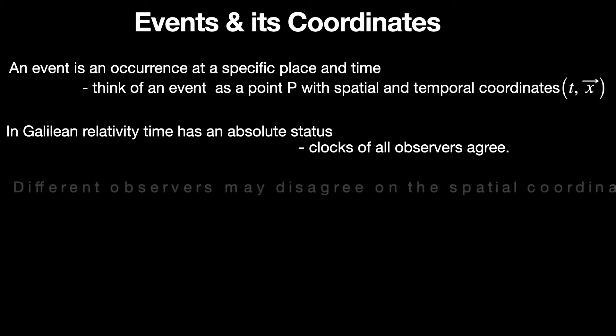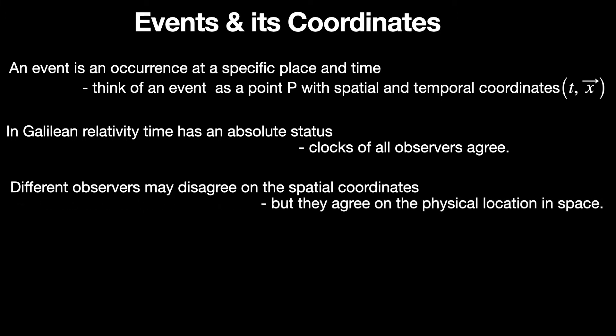Notice that spatial coordinates of an event totally depend on which observer is assigning them and how he or she has laid down the coordinates. The choice of origin, the orientation of axis, the observer's state of motion, all that will be deciding factors. However, these varied assignments of spatial coordinates to this one event can of course be connected with the help of coordinate transformations. And all of them also agree on the actual physical location of the event in space.